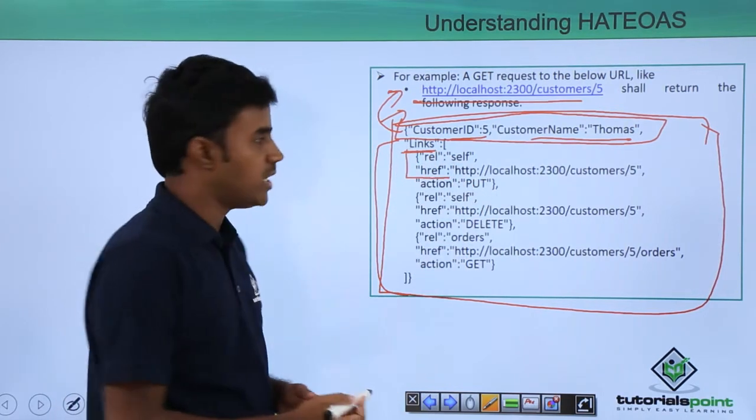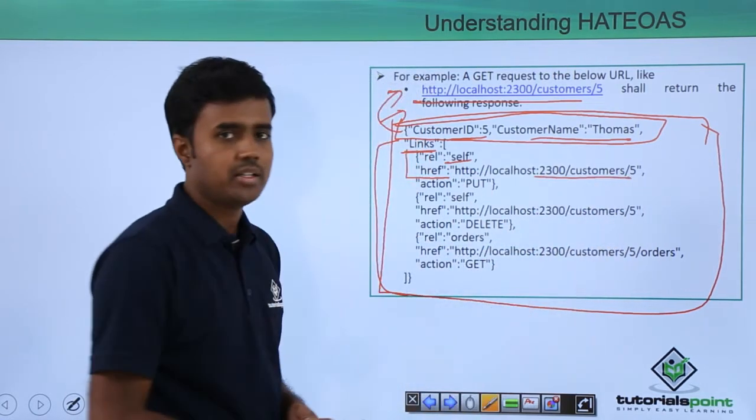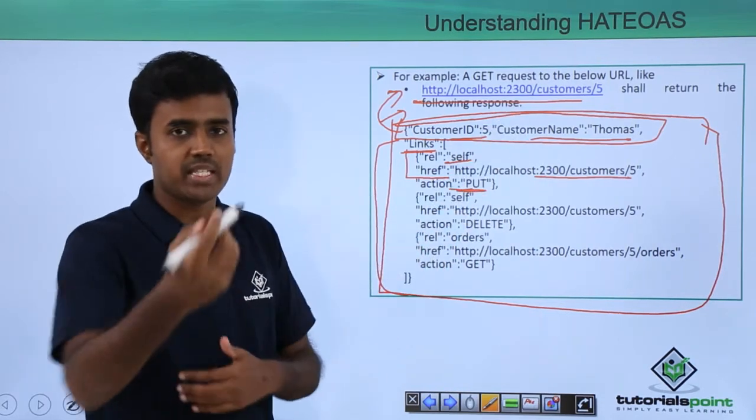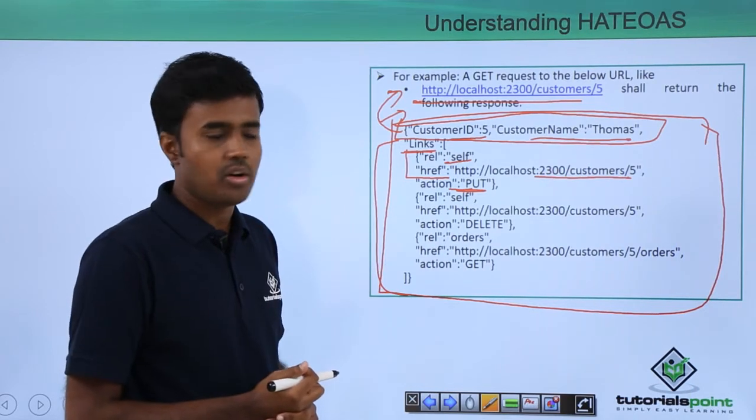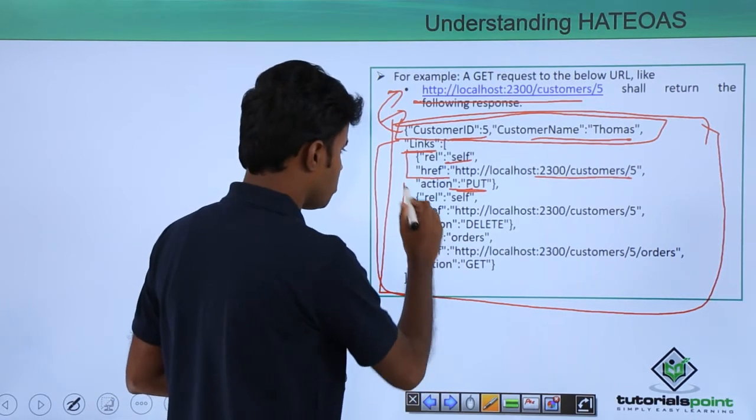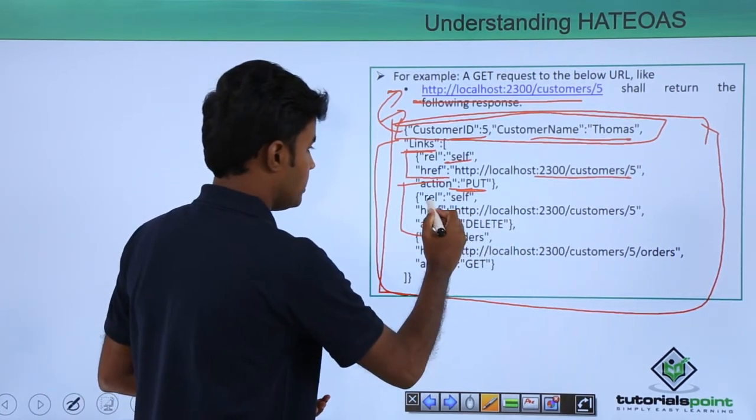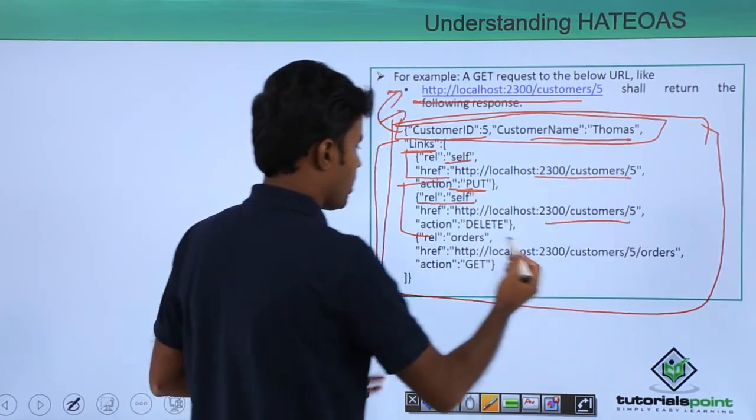This is the self URL. You can also do an update on this particular customer. I'm telling the developer that now you've done a GET, you can also do an update on this resource, and you can also do a DELETE of this resource. It's a self-reference with the same URL.